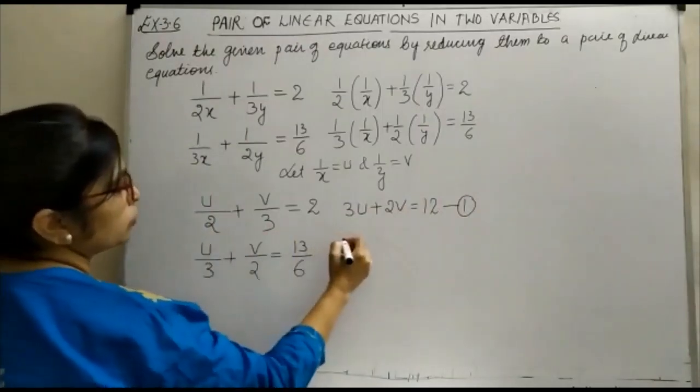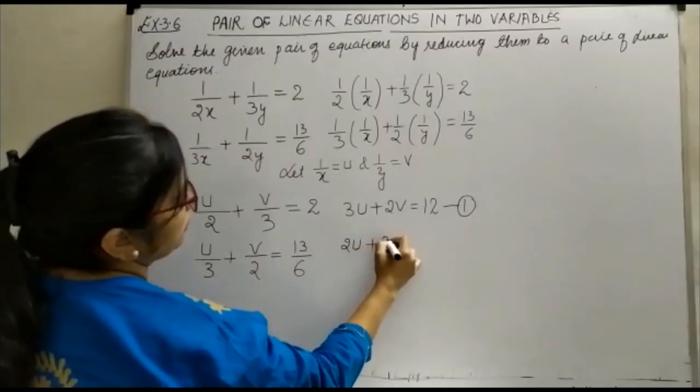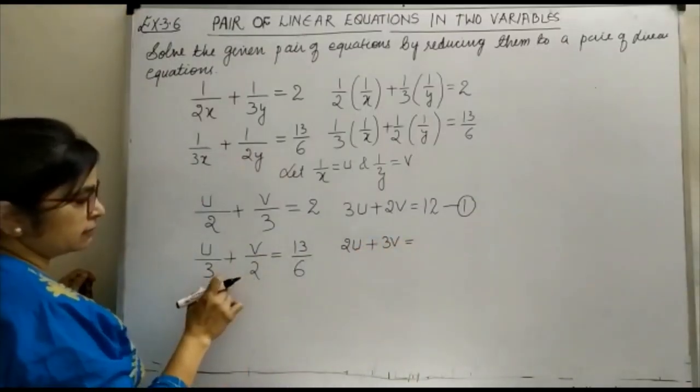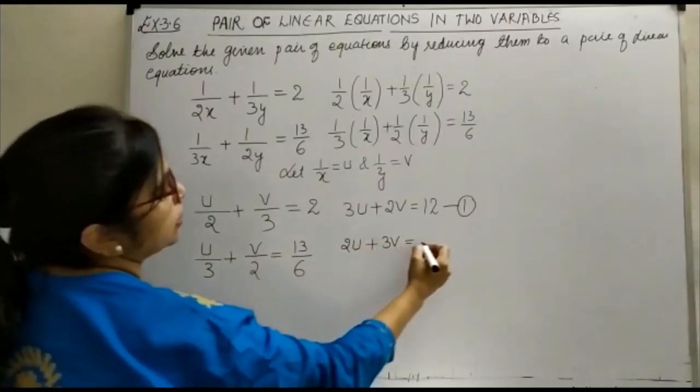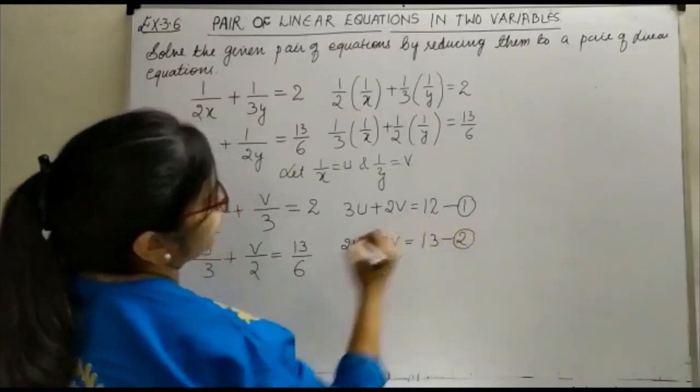Now, similarly this, 2u plus 3v is equal to, when you take the LCM here, this 6 and this side 6 get cancelled, you are here with 13, this is your equation number 2.